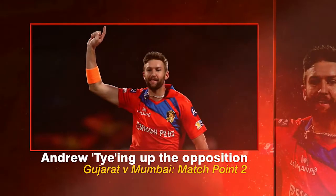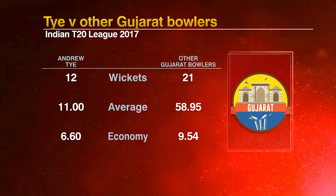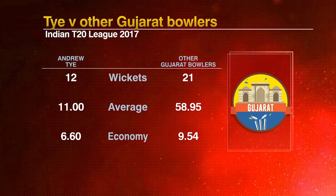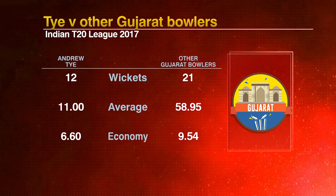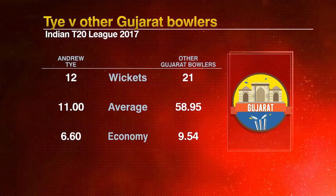Let's move to match point number two. We are speaking of Gujarat Lions' lead bowler Andrew Tye — he's tying up the opposition. He certainly solved a few problems: first game he came in, picked up a hat-trick, three-wicket haul vital in the last game against Bangalore, three big wickets. Looking at some numbers for Andrew Tye compared with other Gujarat bowlers: average of 11, hat-trick and three-wicket haul last game, economy of 6.6.